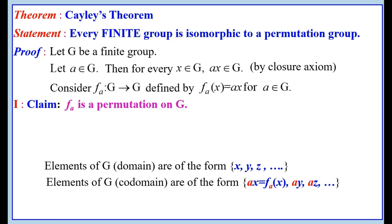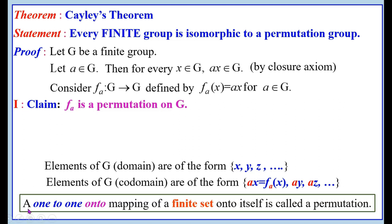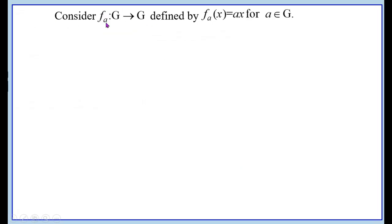This theorem consists of three parts. In the first part, we are going to show that F_A is a permutation on G. A permutation is a one-to-one and onto mapping of a finite set. Therefore, to show that F_A is a permutation, we have to show that F_A is one-to-one and onto, and also check whether F_A is well-defined. The first claim is that F_A is well-defined, where F_A: G → G is defined by F_A(X) = AX for A belonging to G.